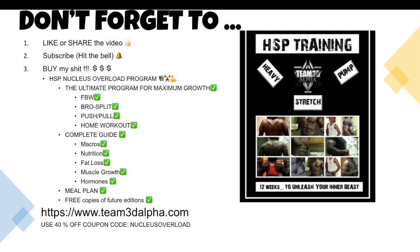It's the ultimate program for maximum muscle growth. It includes full-body workouts, splits, bro splits, push-pull, home workouts, you name it. Also comes with a complete guide for macros, nutrition, fat loss, muscle growth, hormones, including a meal plan. It's pretty much all my 16 years of experience condensed into one book. You're also going to get free copies of any future edition. So visit team3dalpha.com and you can use the 40% off coupon code Nucleus Overload or you could just buy it at full price. All right, guys, I'm out of here.